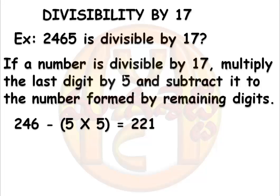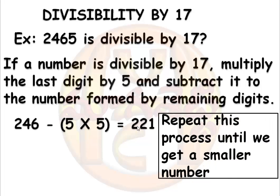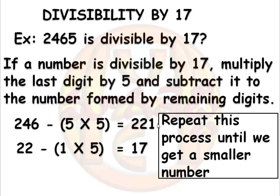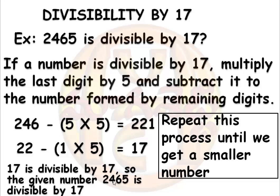Now again repeat the same process until we get a smaller number. Applying the same process on 221: the last digit is 1. Multiplying 1 by 5 gives 5. Excluding the units digit, the remaining number is 22. Subtracting 5 from 22 we get 17. Clearly 17 is divisible by 17, so the given number 2465 is divisible by 17. This is the divisibility rule for 17.